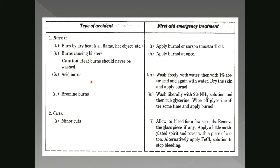For acid burns, when our body part is burned with acid, first wash freely with water, then with 1% acetic acid — this is vinegar — and again with water. Vinegar or acetic acid acts as an antiseptic cream, removing infection. Dry the skin and apply burn oil. Wash with water only, not ice, because ice lowers body temperature.